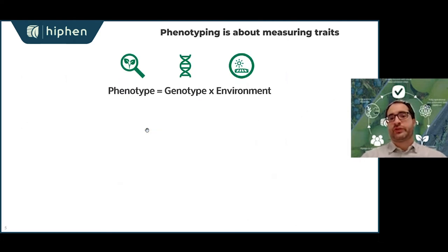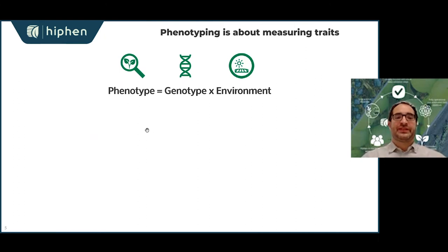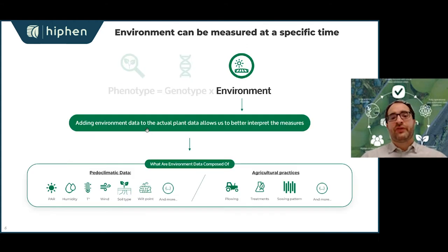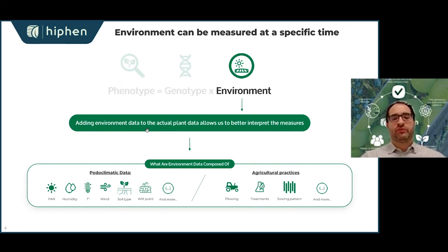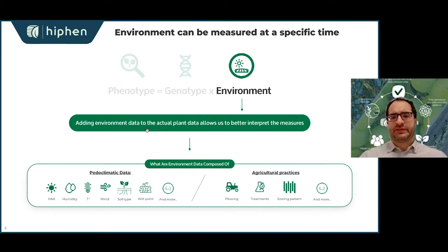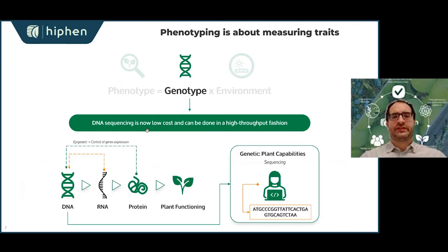Today the discussion is about how phenotyping can be used and the image analytics behind it. The first thing is to go back to the basic equation: phenotype equals genotype times environment, with environment being the pedoclimatic information — such as the quantity of light intercepted by the canopy, the wind, the temperature — but also agricultural practices, which have a huge impact.